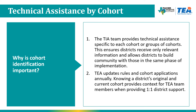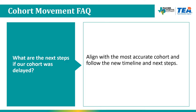Why is cohort identification important? First, our TIA team provides technical assistance specific to each cohort or group of cohorts depending on where they are in their TIA journey, ensuring districts receive relevant information and can build community with other districts in the same phase of implementation. Second, TEA updates commissioner rules and cohort applications annually, so knowing a district's original and current cohort track gives the team important context when providing one-on-one support. TEA recommends that delayed districts align with the most accurate cohort based on their intended plans moving forward and follow the new timeline and next steps.